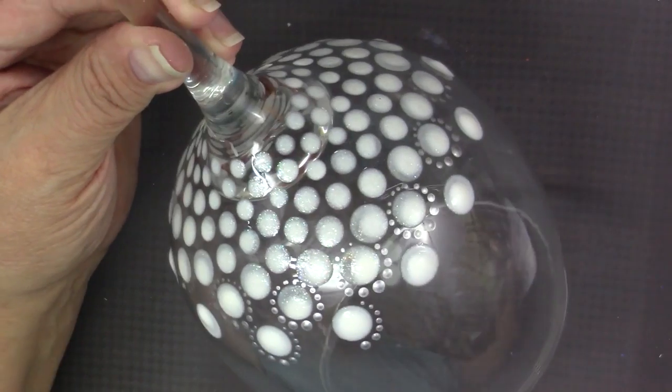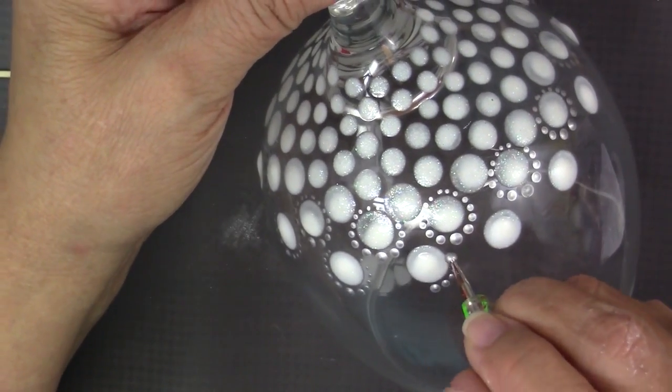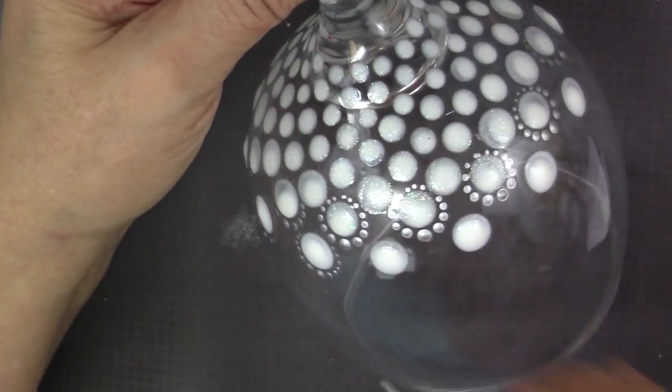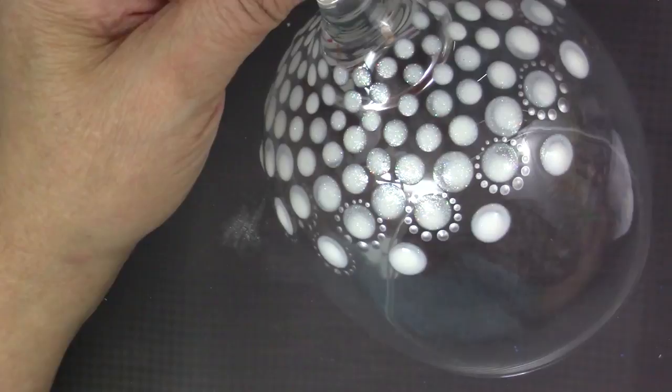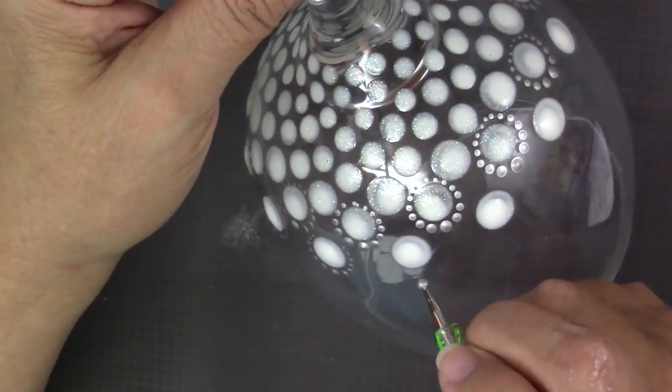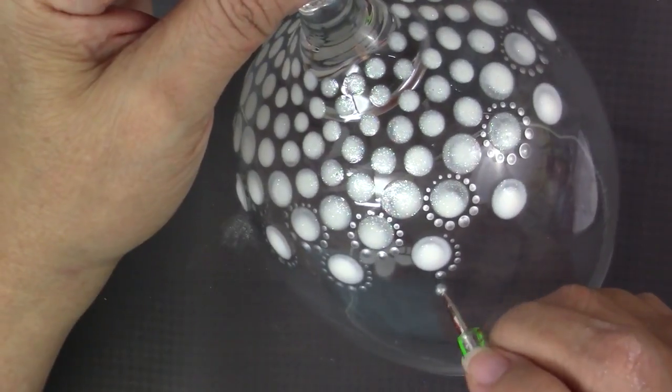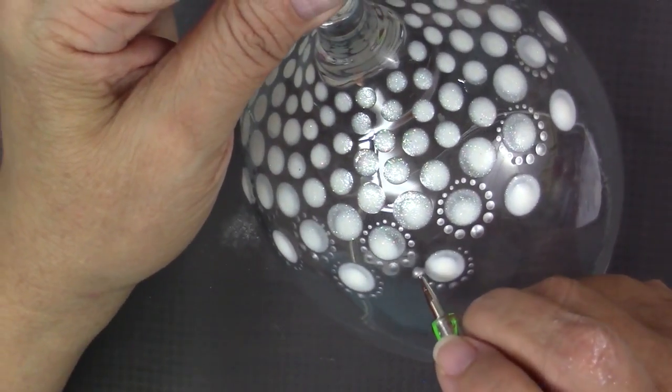Now, both of these paints are gloss enamel, so that means you can cure them per the manufacturer's instructions, which is four days, and then you bake it in an oven, and then it's dishwasher safe. So that's a really nice thing about these particular paints. So just keep going around with walking the dots.